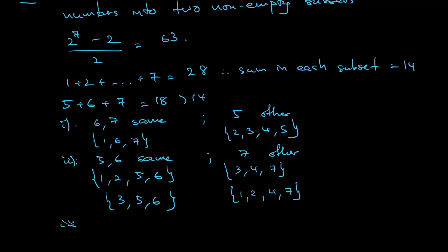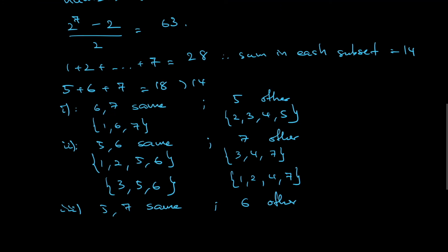Case 3: 5 and 7 are in the same subset, and 6 is in the other. 5 plus 7 is 12, and I need the sum to be 14, so I need 2 more. I can't use 1 and 1 since they're the same number, so the only case is {2, 5, 7}. That's one valid arrangement.